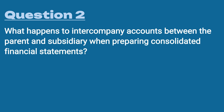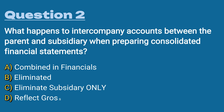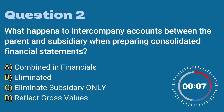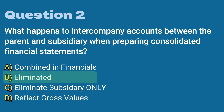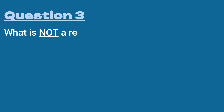Question number two: what happens to intercompany accounts between the parent and subsidiary when preparing consolidated financial statements? A) combined in the financials, B) eliminated, C) eliminate the subsidiary only, or D) reflect the gross values. The answer is B) eliminated. Intercompany accounts between a parent and a subsidiary will be eliminated — there are no due-tos and due-froms when consolidating. You eliminate the intercompany receivables and payables.